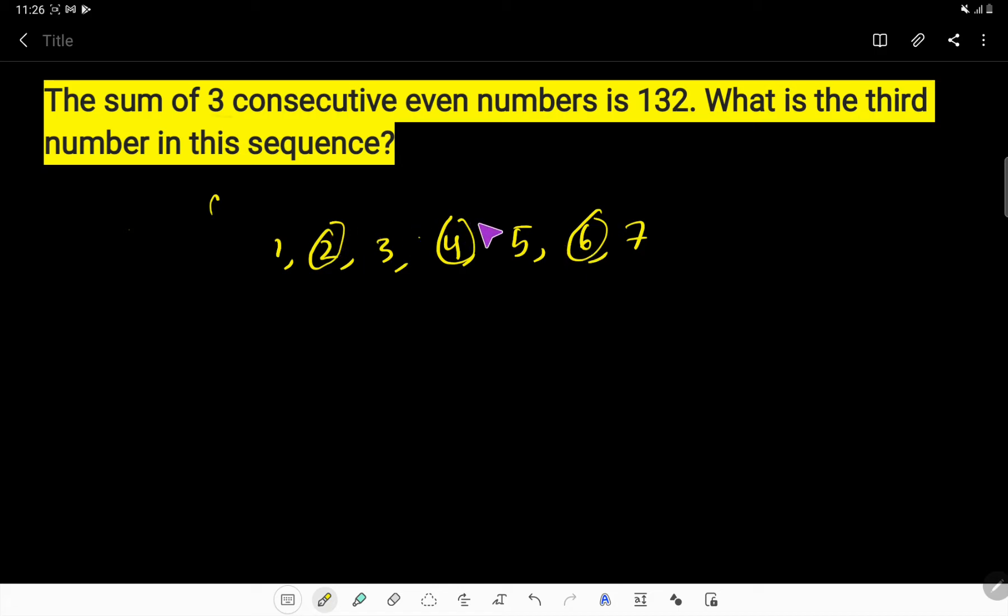And these are consecutive even numbers because after two, we'll get even number four. Then four we'll get six. Look, the difference between these two even numbers is always two. Six minus four, two. Four minus two, two, right?